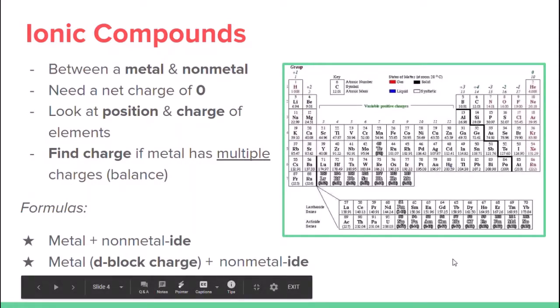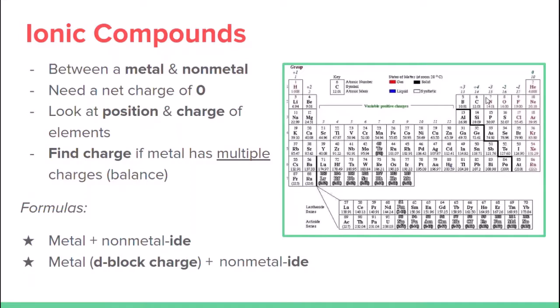For d-block elements, we take our metal — iron — and the d-block charge will be shown in Roman numerals. Iron with oxygen has a positive two charge when they balance one-to-one, so it'll be iron(II) oxide, because we change the oxygen ending to -ide.